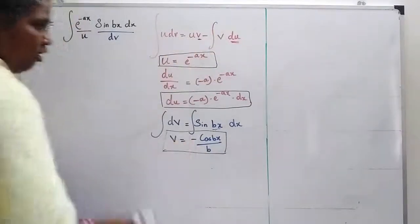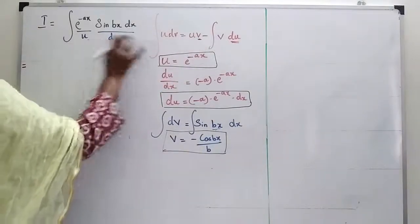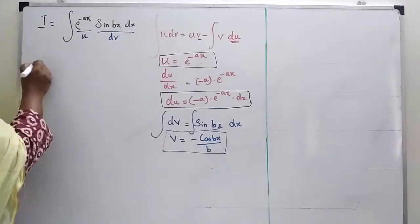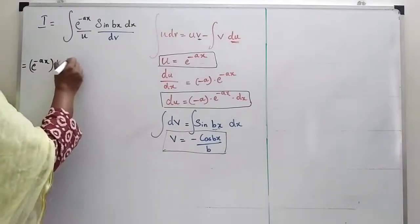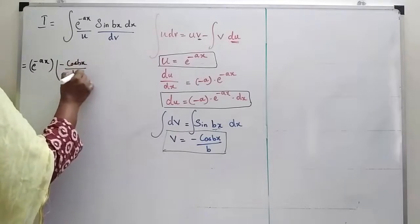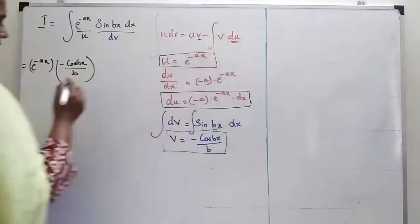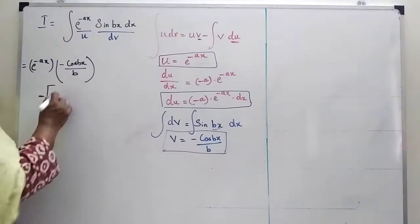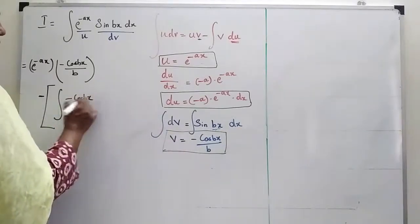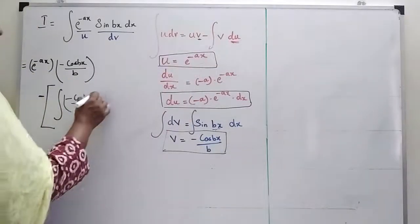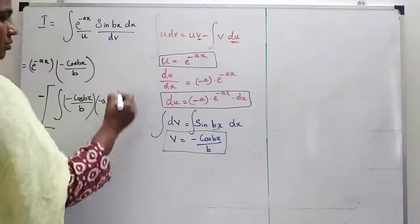Now I substitute into the formula. For uv: u is e power minus ax and v is minus cos bx by b. For the integral v du term: v is minus cos bx by b and du is minus a into e power minus ax dx.